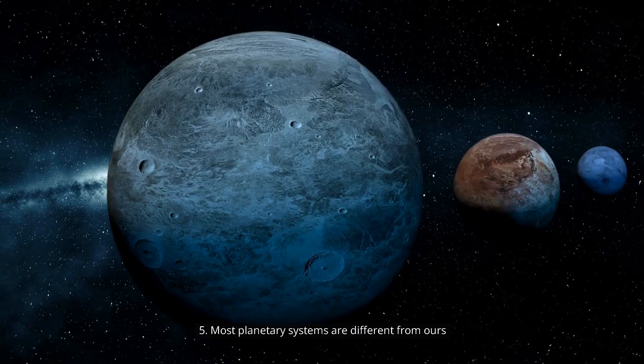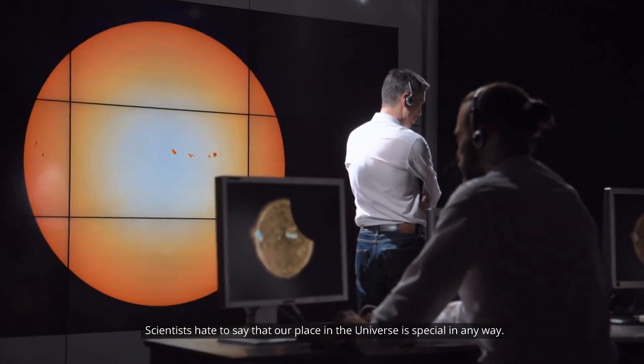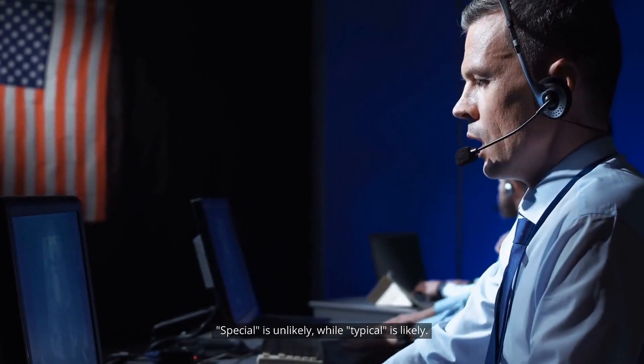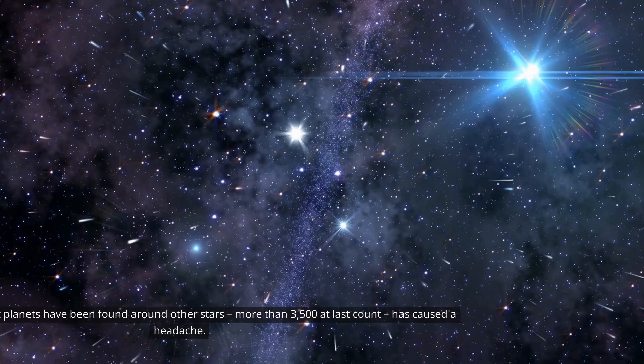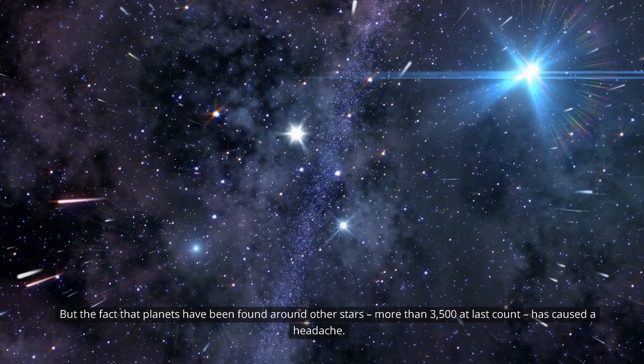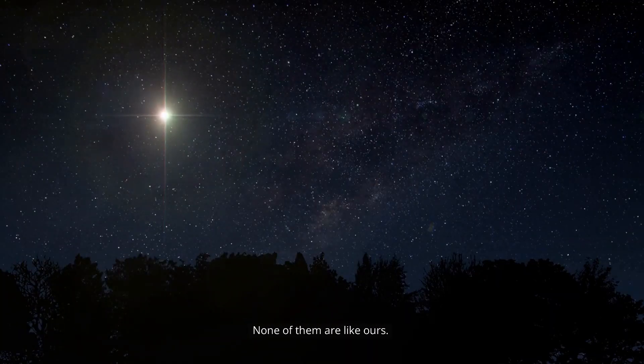Number 5. Most planetary systems are different from ours. Scientists hate to say that our place in the universe is special in any way. Special is unlikely, while typical is likely. But the fact that planets have been found around other stars, more than 3500 at last count, has caused a headache. None of them are like ours.